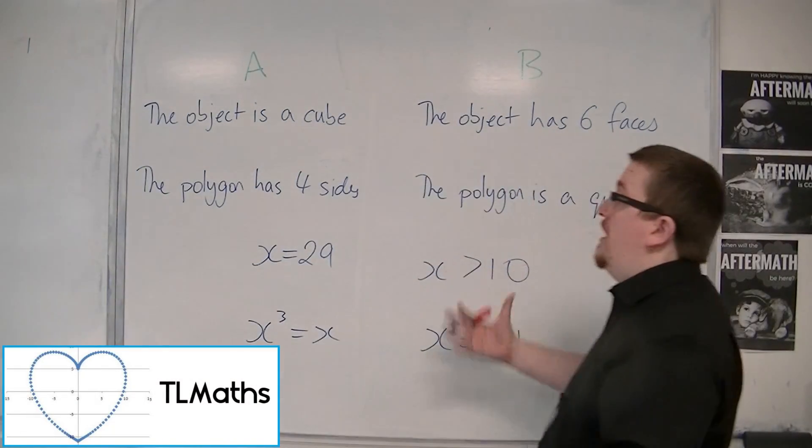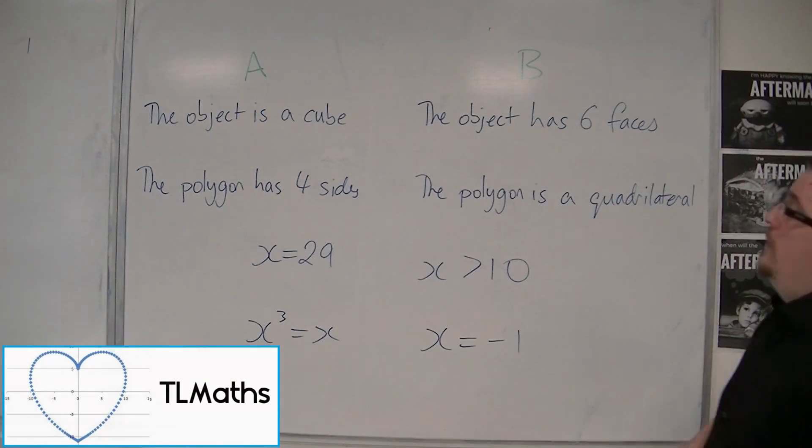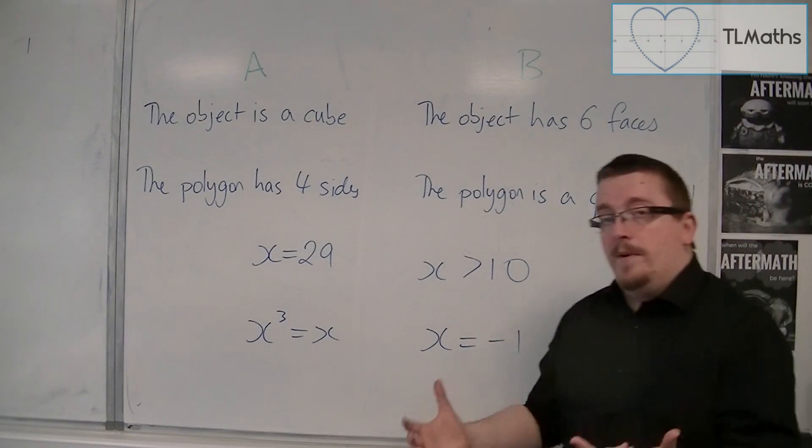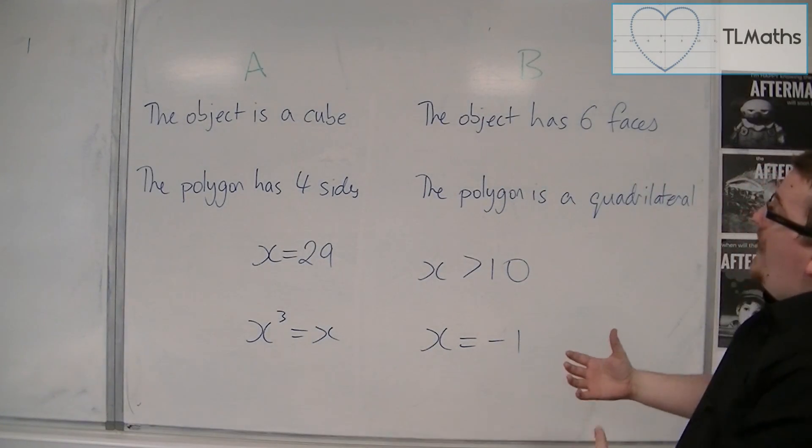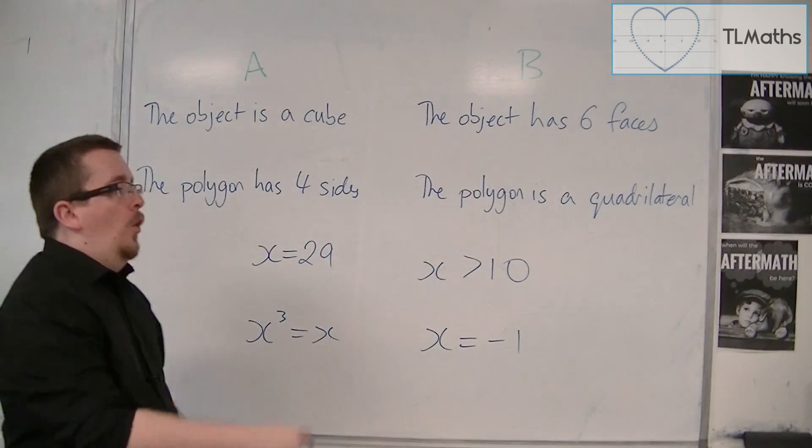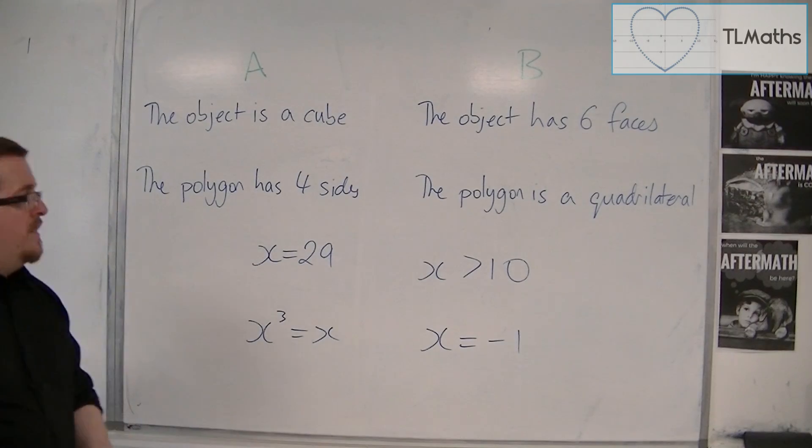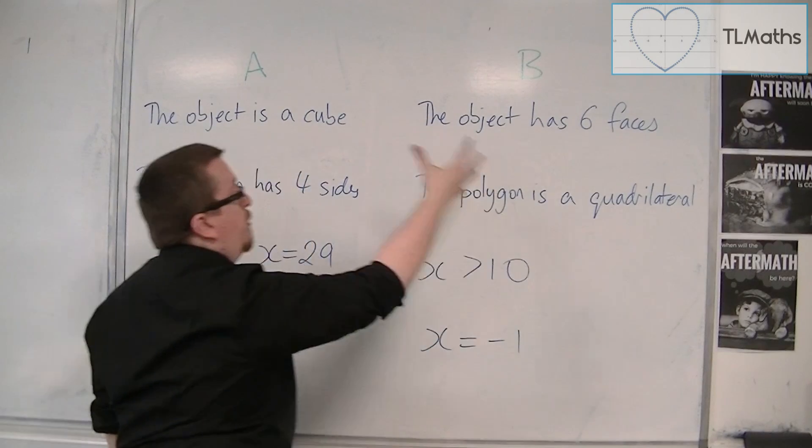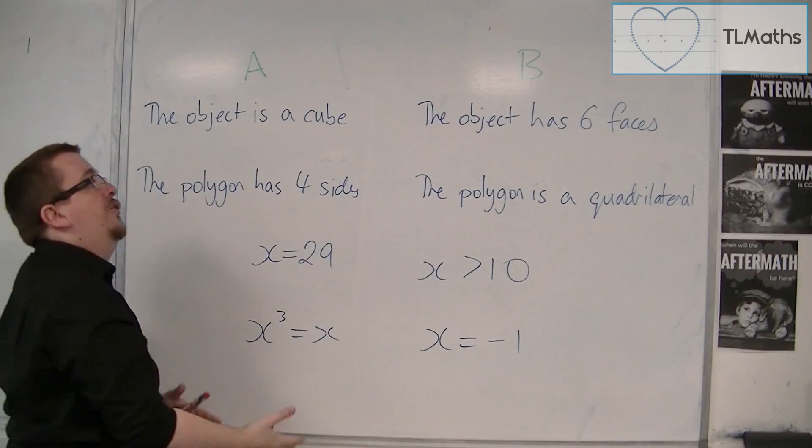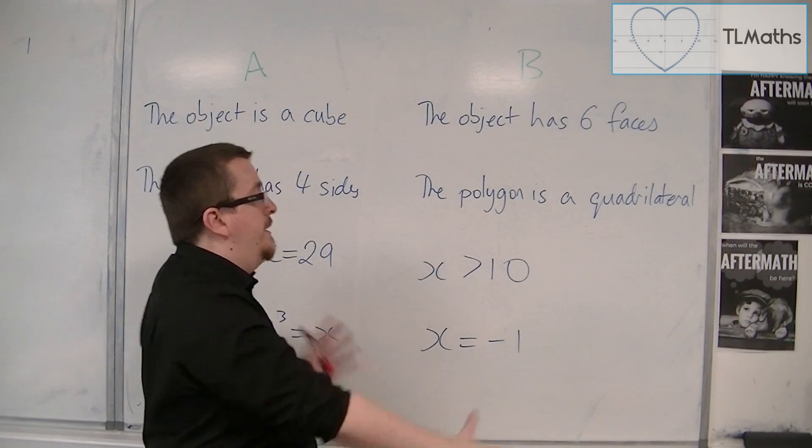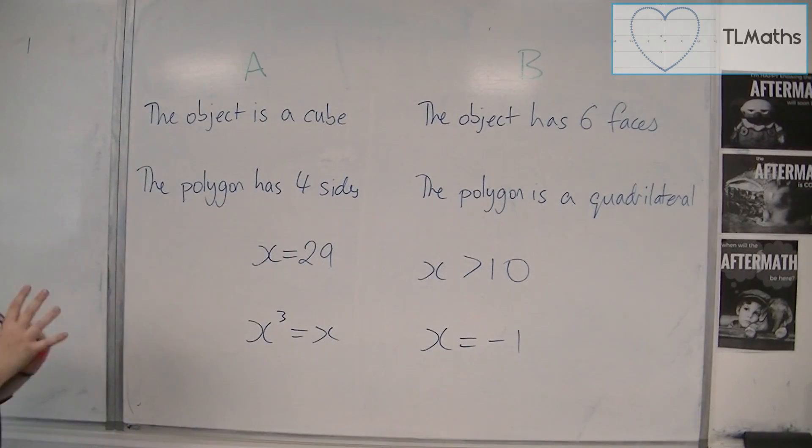So here are some statements. We have a set of A and a set of B, and we need to determine whether we should draw an arrow going this way, this way, or both ways. Is it a logical consequence? Does A imply B? Does B imply A? Or do we have A if and only if B? So they're my three choices.